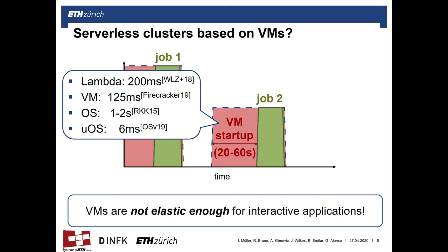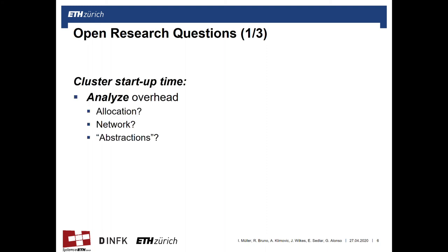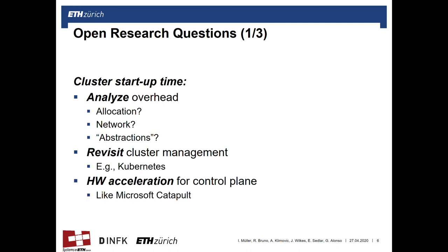Why is that? And the honest answer is we don't know. What we have done is to devise a set of research questions. The first set of questions is to find out where this overhead comes from. Is it the allocation of free resources? Is it the network setup? Is it some abstraction required to manage the cloud? One way to study this is to study cluster management for on-premise clusters, for example using Kubernetes, where the effects are similar and hence solutions are hopefully also similar. Maybe we will end up requiring hardware acceleration for the control plane, similar to what Microsoft Catapult is doing, in order to speed up this process.